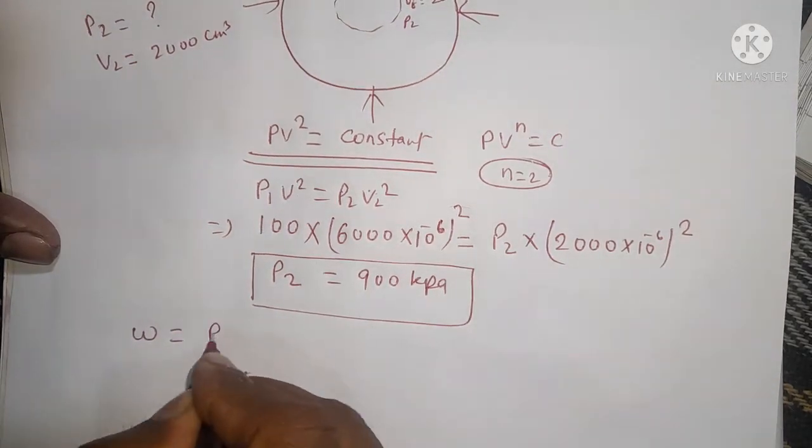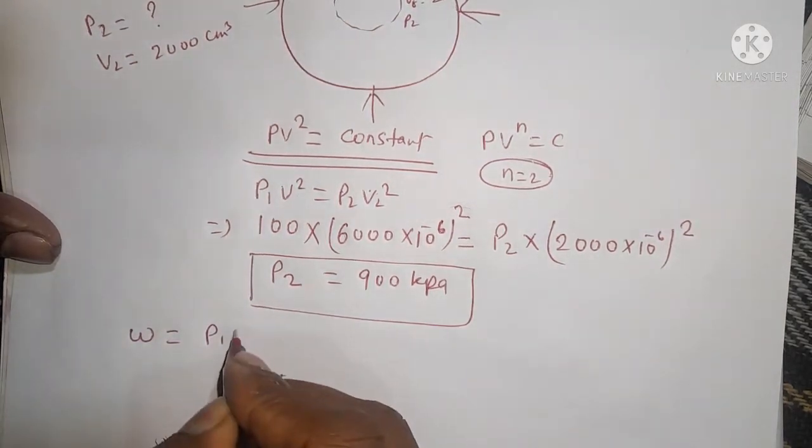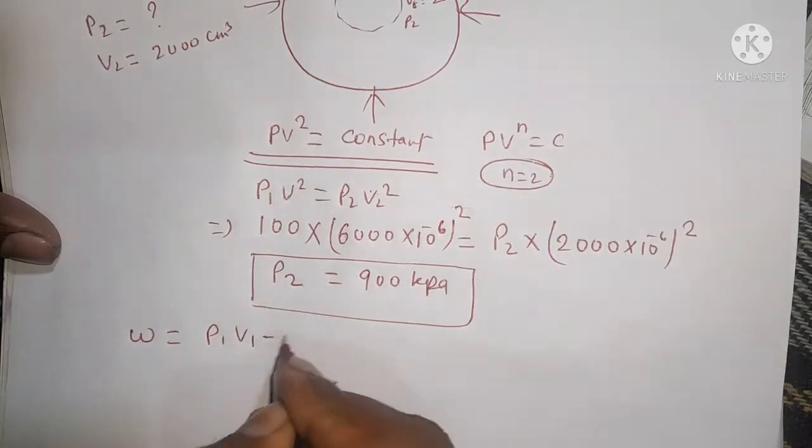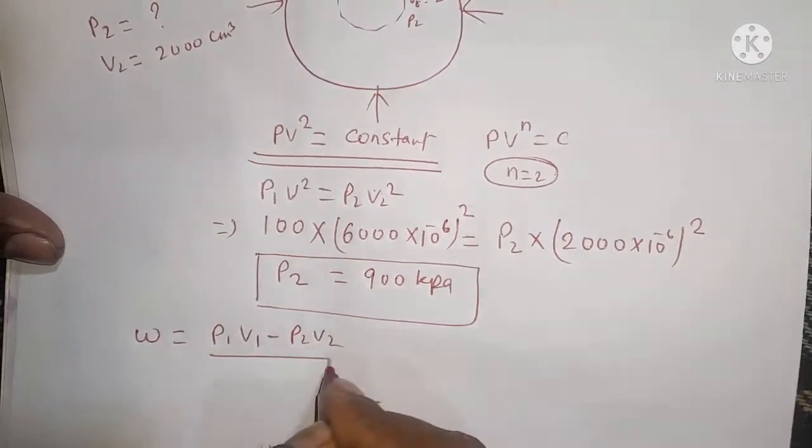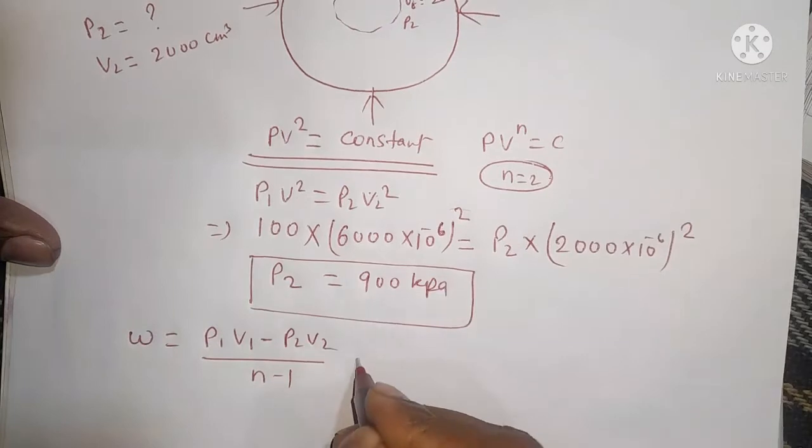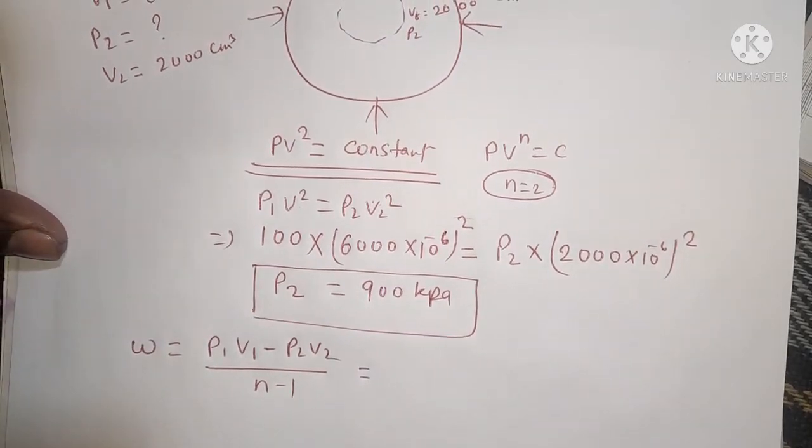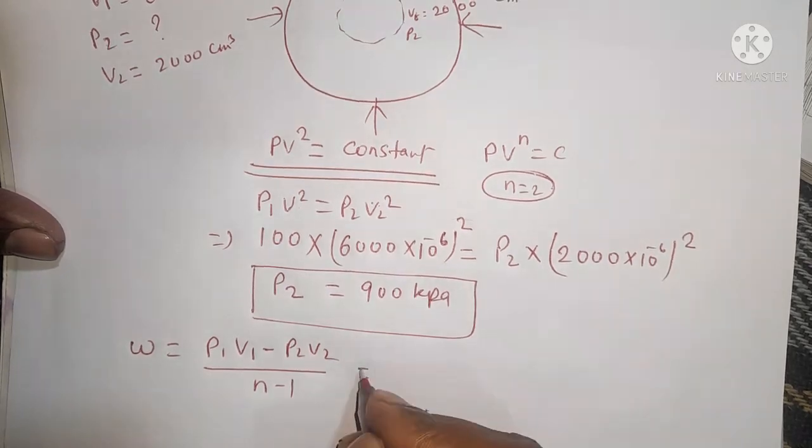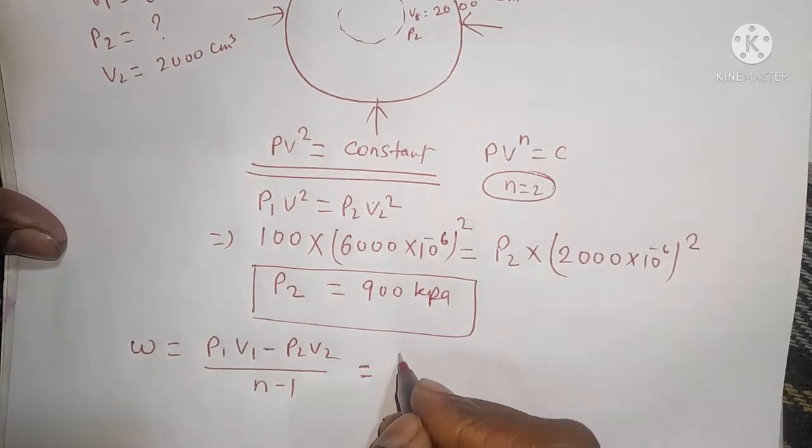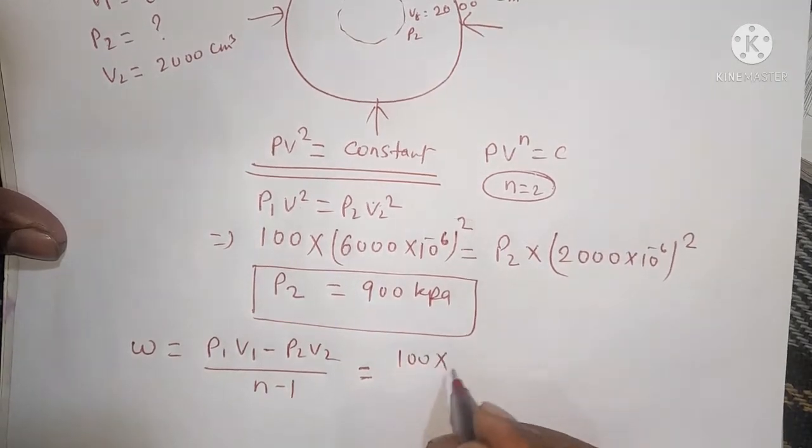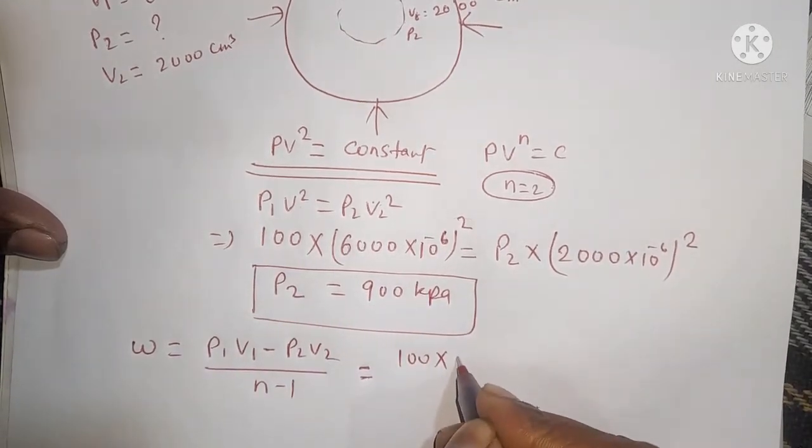For compression work in a polytrophic process, the formula is W = (P1V1 - P2V2)/(n-1). We have calculated P1 and P2, so now we substitute the values.